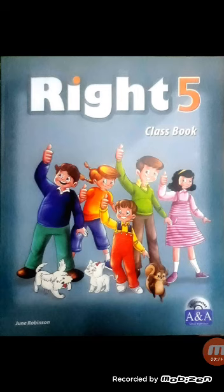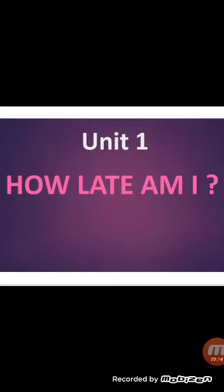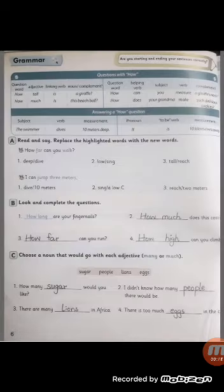As you know in our previous lectures of the book Right 5 for the students of class 5, we started the reading of unit 1, that is How Late Am I? In our previous lectures, we have read lesson 1 and lesson 2. Today we are going to do the grammar work or the grammar exercise of lesson 2, unit 1, that is page number 6.